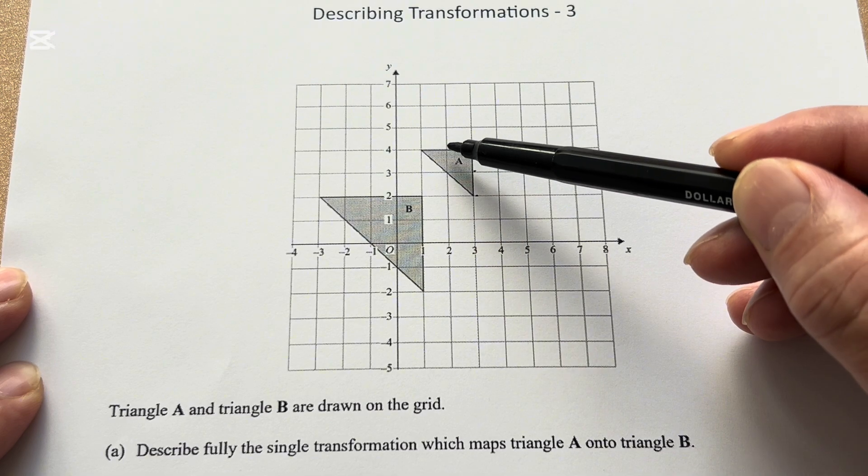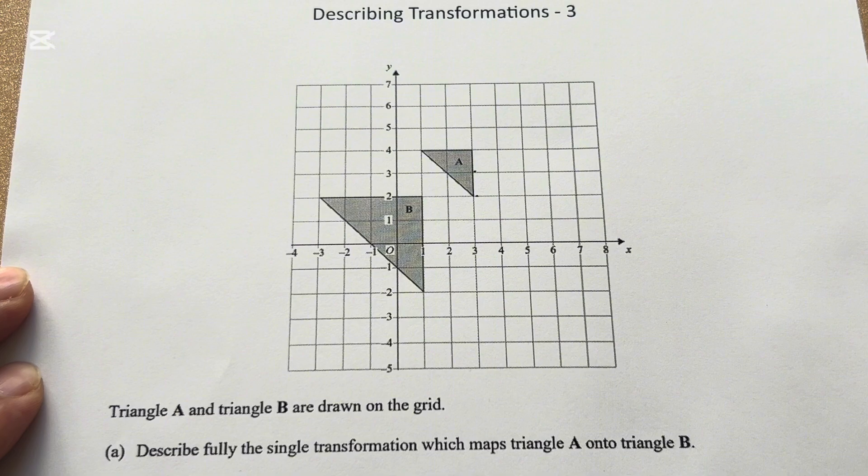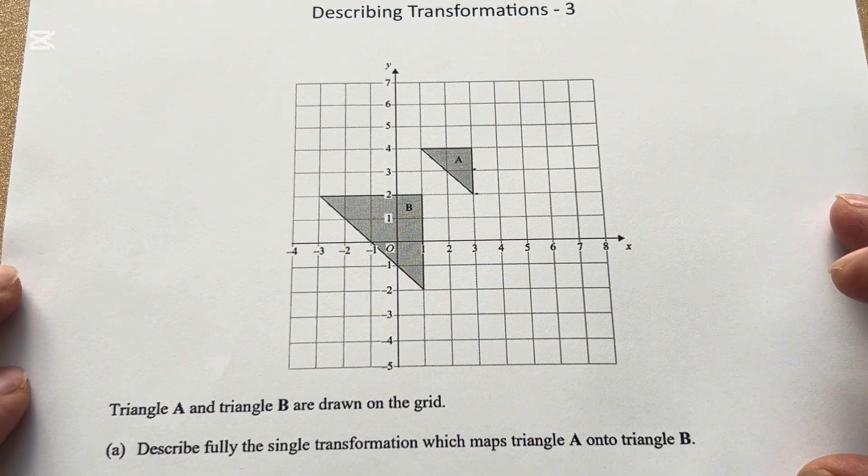Let's take the top one: two units. One, two, three, four units. The scale factor is four divided by two. That's two.